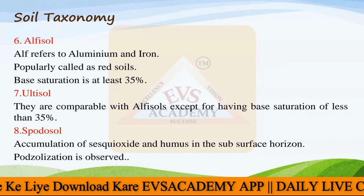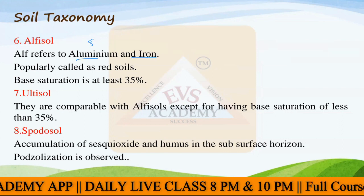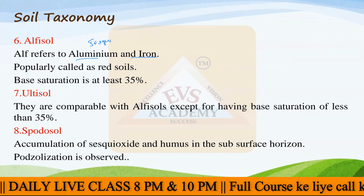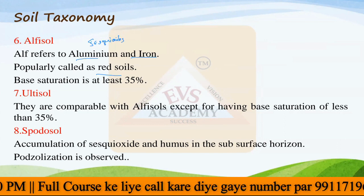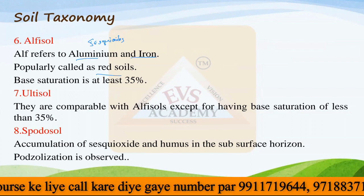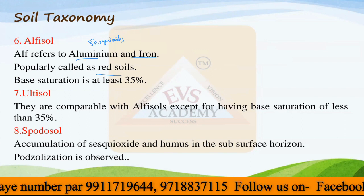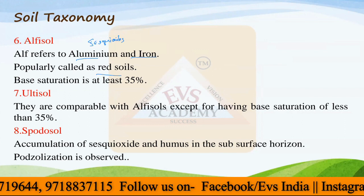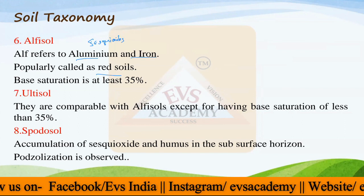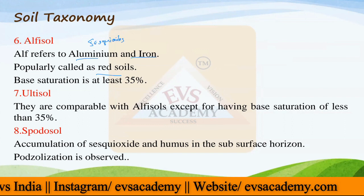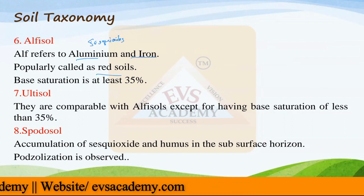Then we have Alfisols. 'Alf' refers to aluminium and iron - it means sesquioxides. They are popularly called as red soils. Base saturation is at least 35% in Alfisols. The color is red due to the presence of sesquioxides. This is also a kind of laterite soil - laterite soil is under the category of Alfisols.